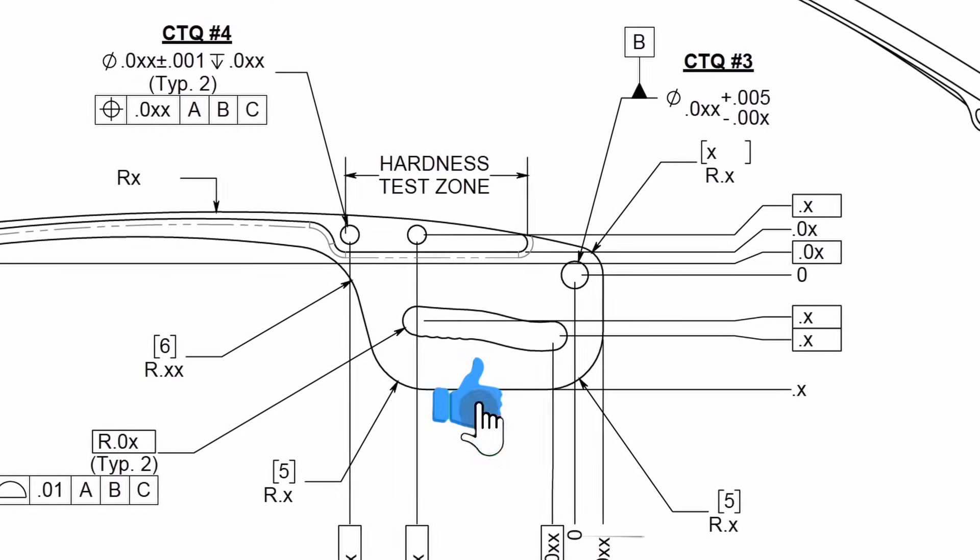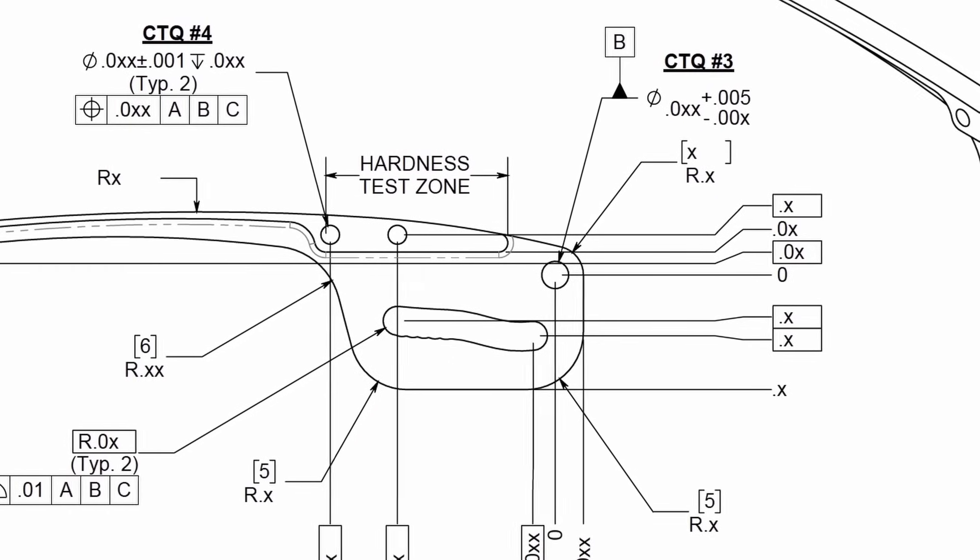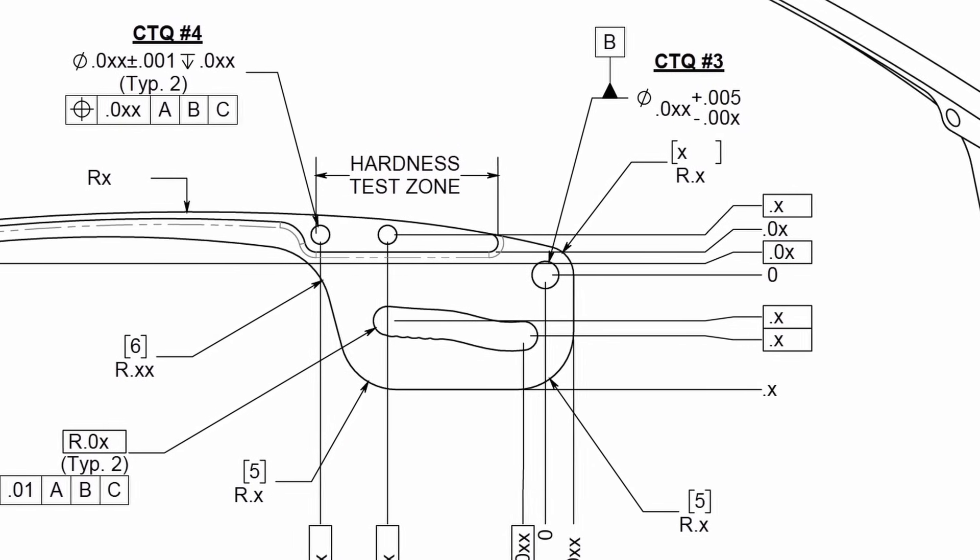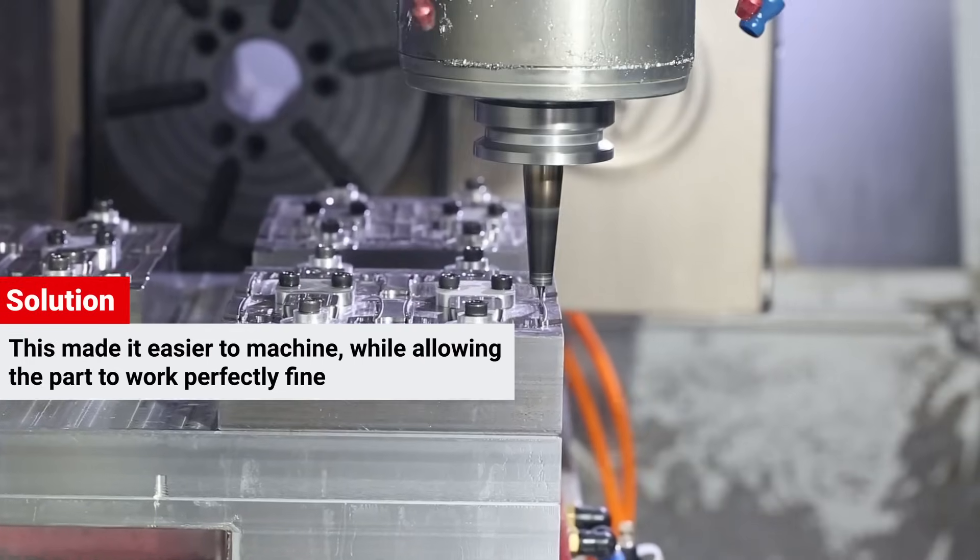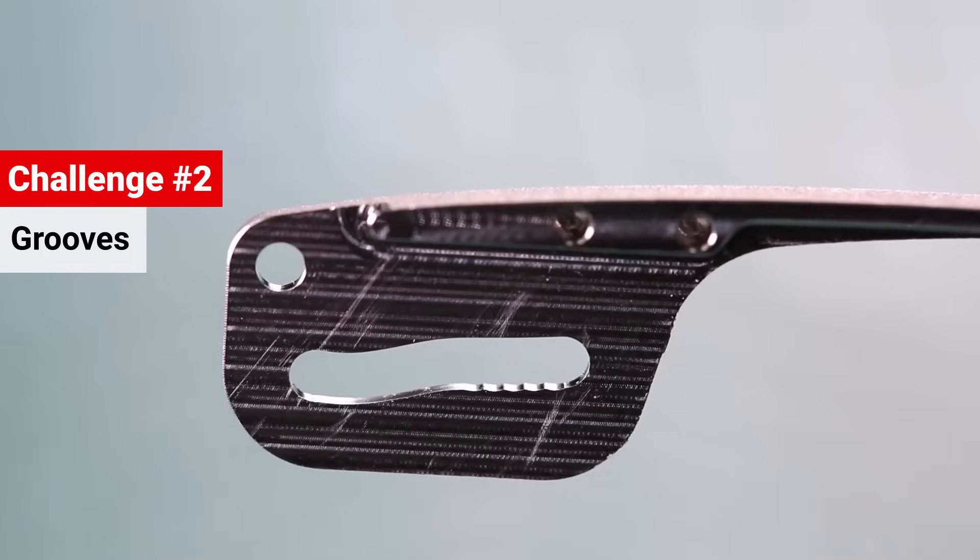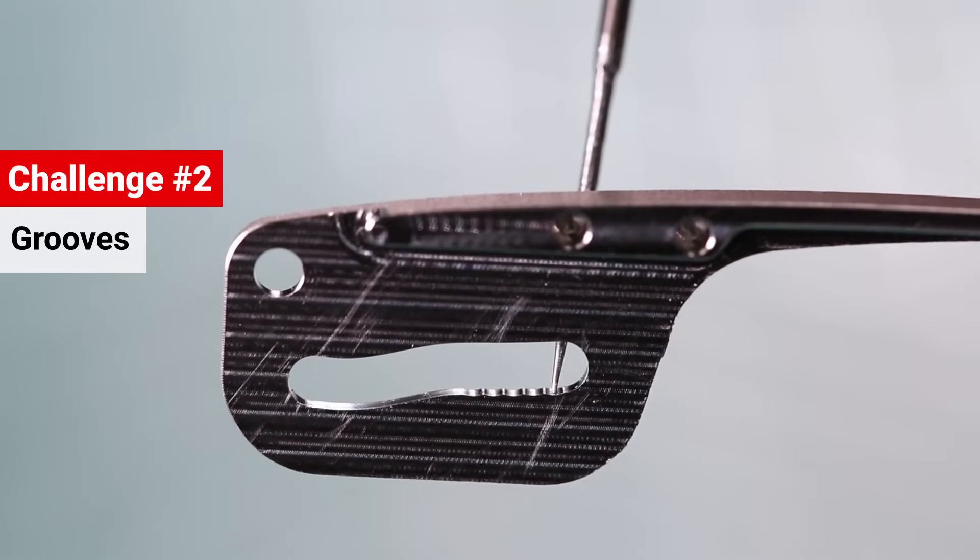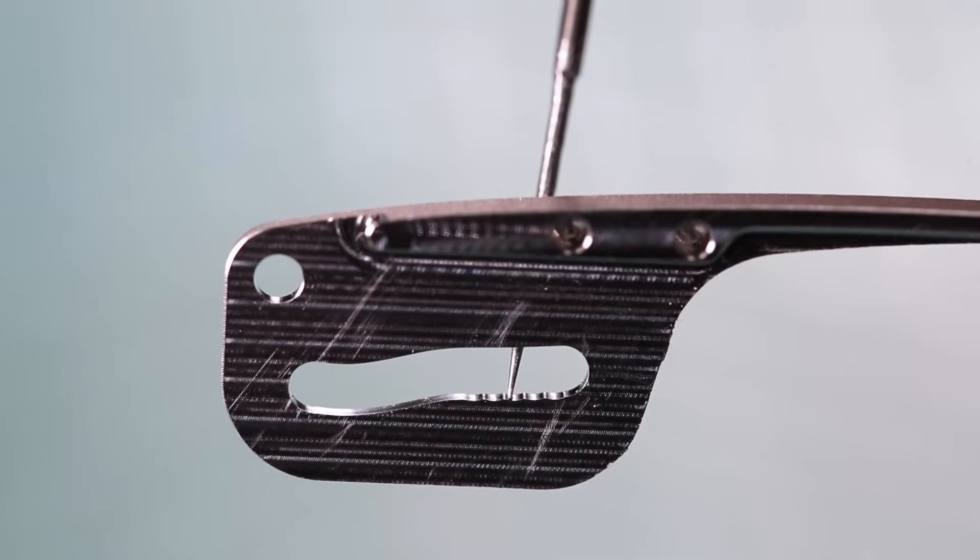As a consequence, it became apparent that some of the other features that rotate around this point didn't really need to be so tight after all. This made them easier to machine while allowing the part to still work perfectly fine. The next important feature we want to point out are these very small grooves or ridges that you can see in this cutout slot.